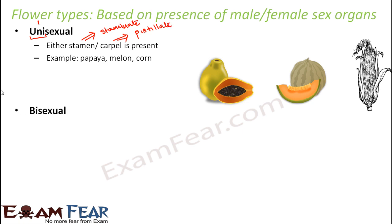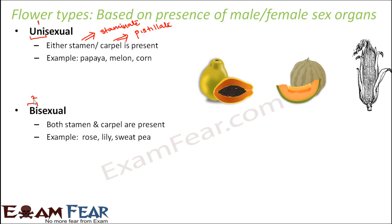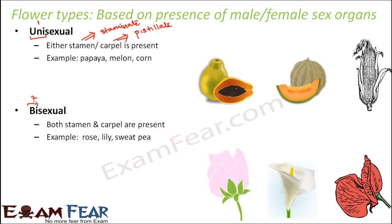The next type is bisexual — that is, two sexes are present. That means both stamen and carpel are present in such flowers. Examples of bisexual flowers would be rose, lily, and sweet pea. If you look at a rose, you will actually be able to see both the stamens as well as the carpels. So these are the two types of flowers based on the presence of male or female sex organs: unisexual, where only one sex is present, and bisexual, where both sexes are present.